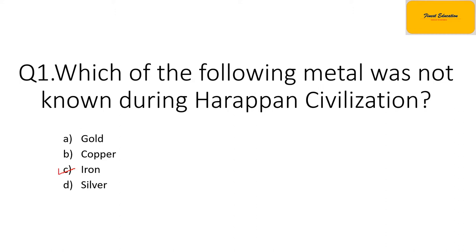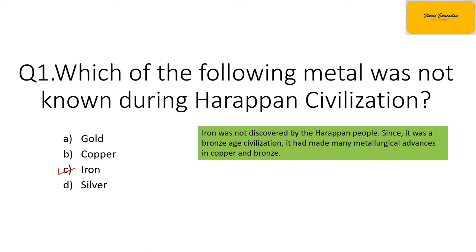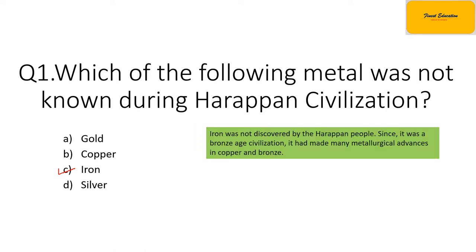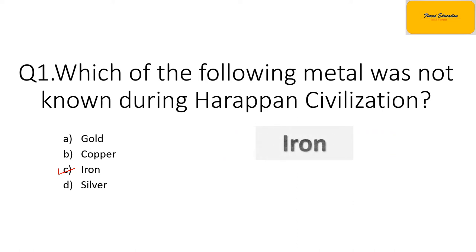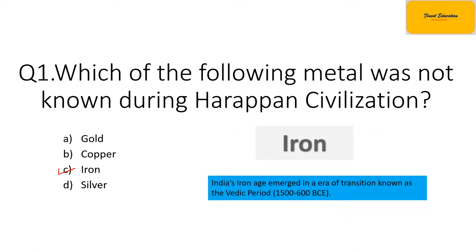Iron was not discovered during the Harappan Civilization. In that time period, bronze, copper, and tin were quite prominent. Iron appears in the Harappan Civilization in the time period lasting from 1500 to 1600 BC. Let's move on to our next question.